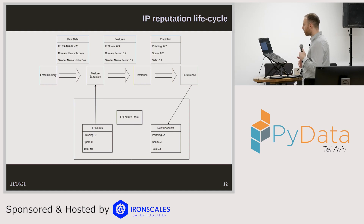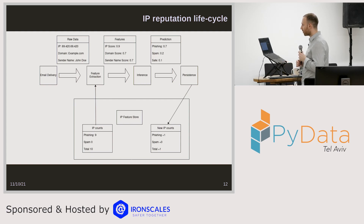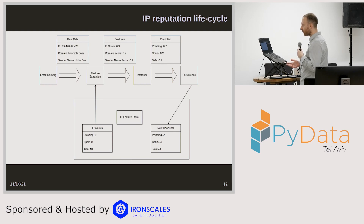What does that look like for IP reputation? We have some raw data coming in — the IP address 69420. We extract the IP score by querying our feature store. Let's say the score is 0.9 because we've seen this email 10 times, with nine marked as phishing. We map that prediction using some kind of tabular data machine learning algorithm, giving us 70% probability of phishing. At the persistence layer, we save those counts to our IP reputation feature store — incrementing phishing count plus one, total plus one — and then use that to classify further emails.